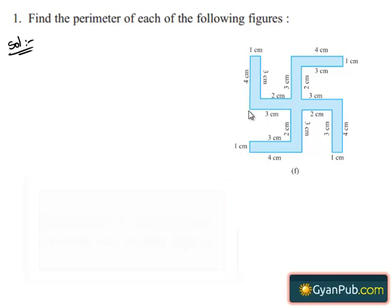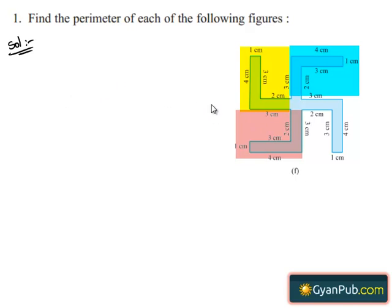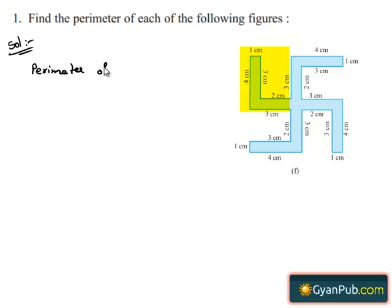Now observe the given figure. It is a symmetrical one with four L-shaped components. So the perimeter of the entire figure is nothing but four times the perimeter of each L-shaped component. So first let us find out the perimeter of each L-shaped component.